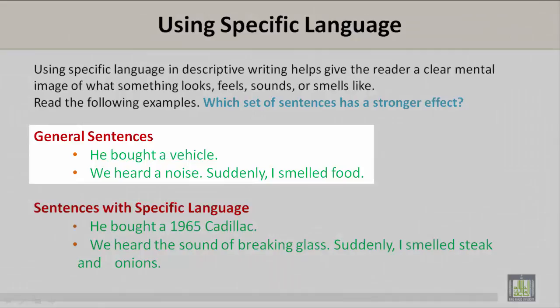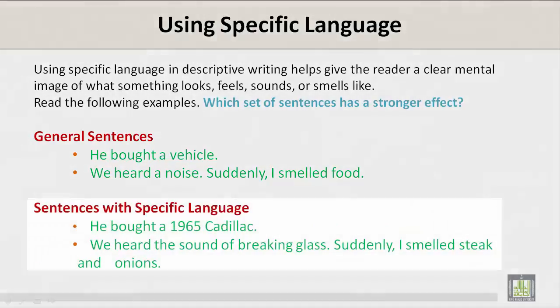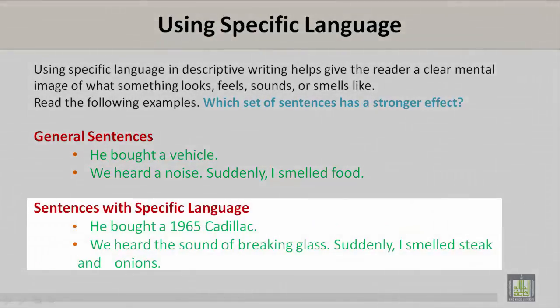General Sentences: He bought a vehicle. We heard a noise. Suddenly I smelled food. Sentences with specific language: He bought a 1965 Cadillac. We heard the sound of breaking glass. Suddenly I smelled steak and onions.